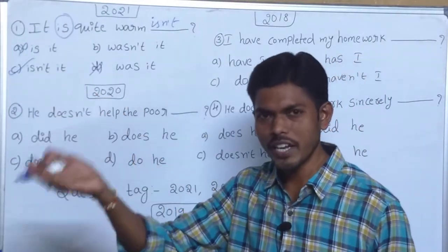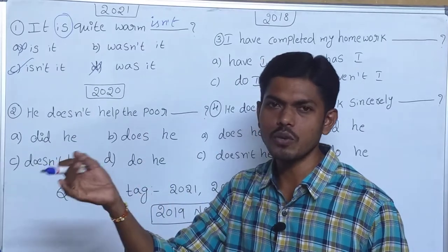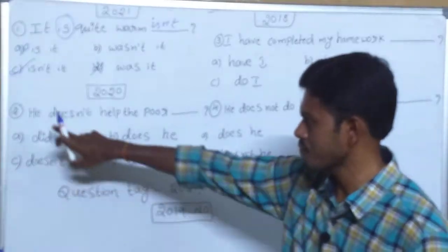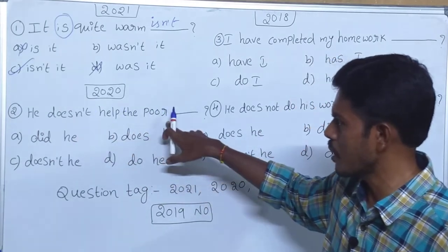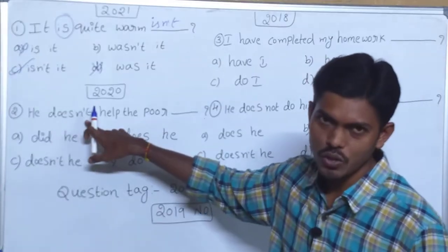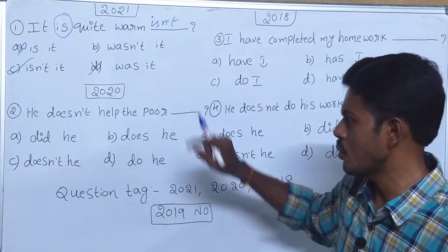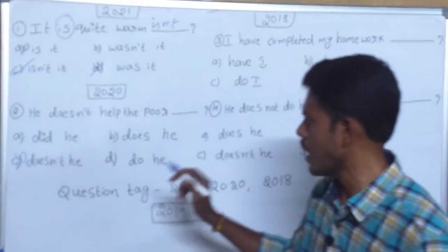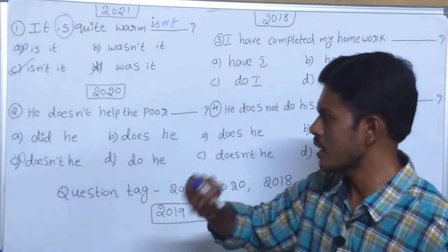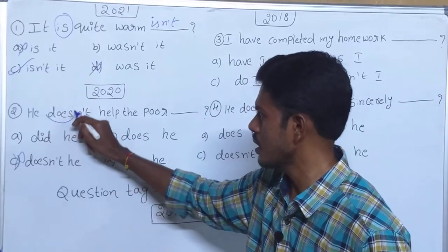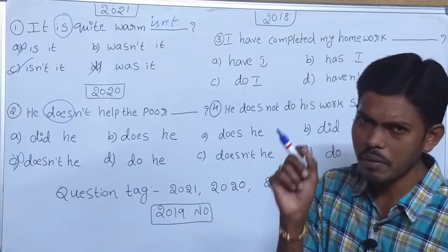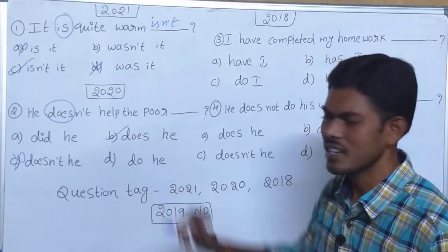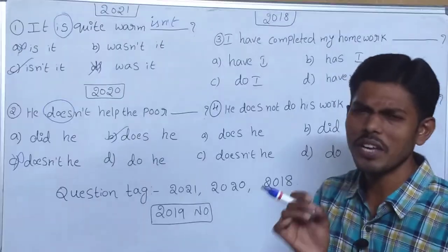Next one: 'He doesn't help the poor' — this is negative, so the answer is positive. One option is negative — not our answer. Three positive options are there, but look at the helping verb: 'does.' Same helping verb 'does' — so this is our answer. Very easy.